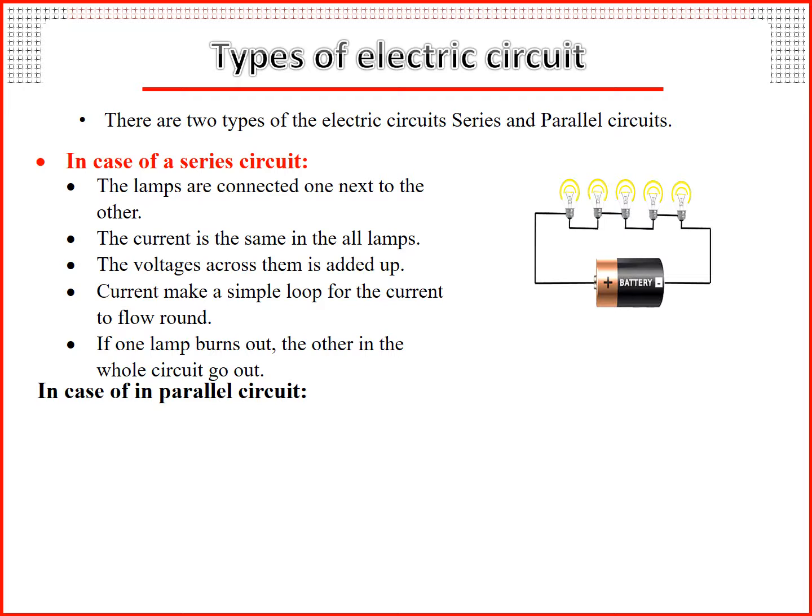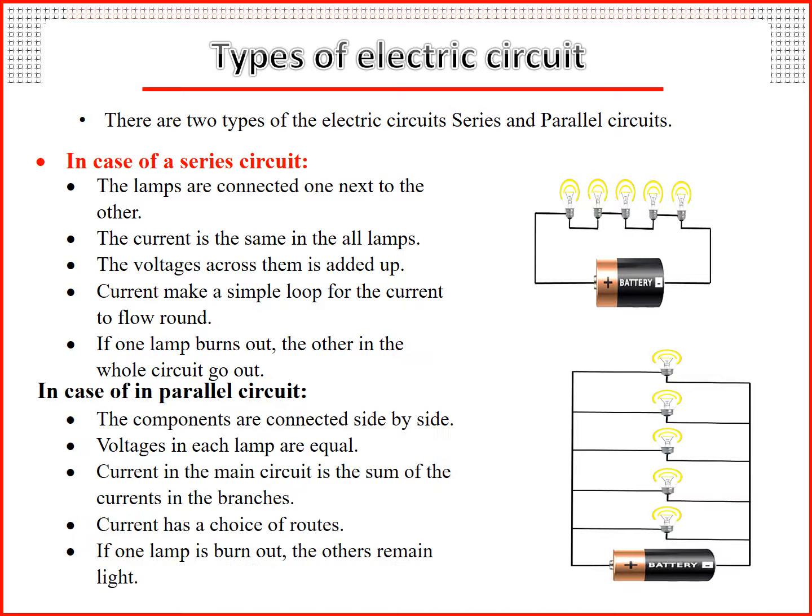In case of a parallel circuit: The components are connected side by side. Voltages in each lamp are equal. Current in the main circuit is the sum of the currents in the branches. Current has a choice of routes. If one lamp is burned out, the others remain light.